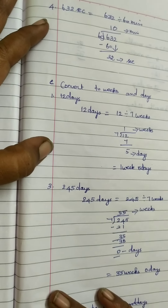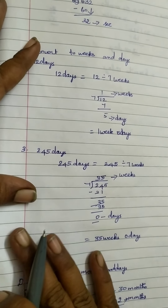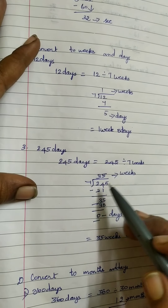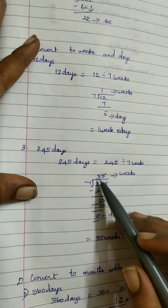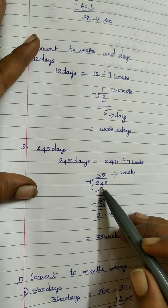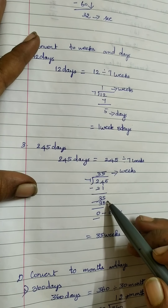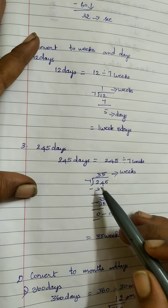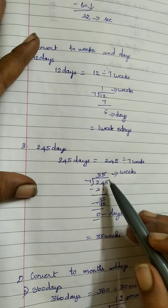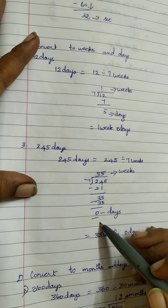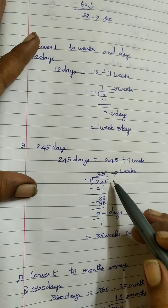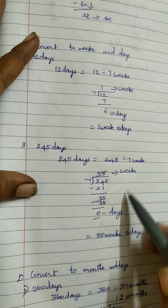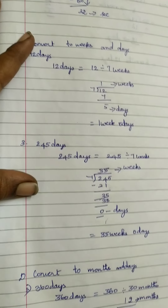The next problem is 245 days, dividing by 7. Seven 3s are 21; 24 minus 21 is 3, bringing the next digit down gives 35. Seven 5s are 35, so the remainder is 0. The quotient is 35, so your answer is 35 weeks 0 days.